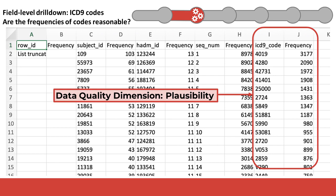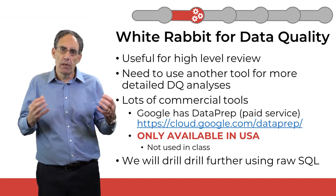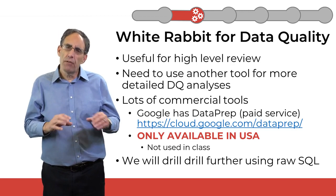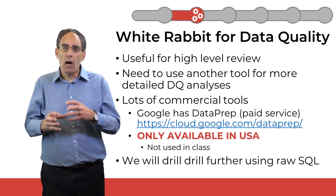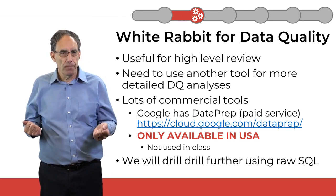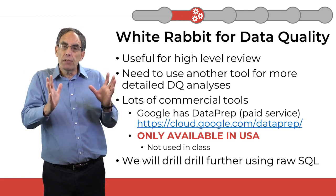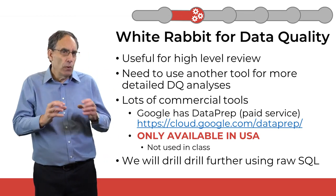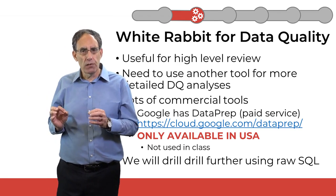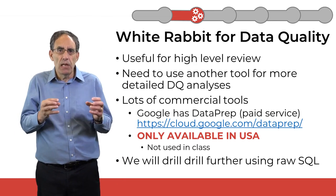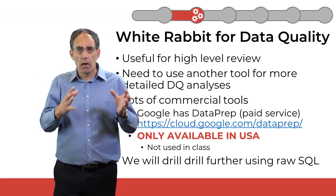We have shown how the open-source data profiling tool White Rabbit provides some high-level features that can be used for simple data quality assessments. To dig deeper into more complex data quality features, including complex data quality measures, we need a more capable tool. This is a very rich area with an extensive commercial marketplace, including Google's cloud-based Data Prep service. However, we do not use any commercial tools in this course, leading us to use raw SQL for additional data quality assessments. Another alternative is to implement these types of data quality checks in a variety of programming languages, such as SQL, R, and Python.